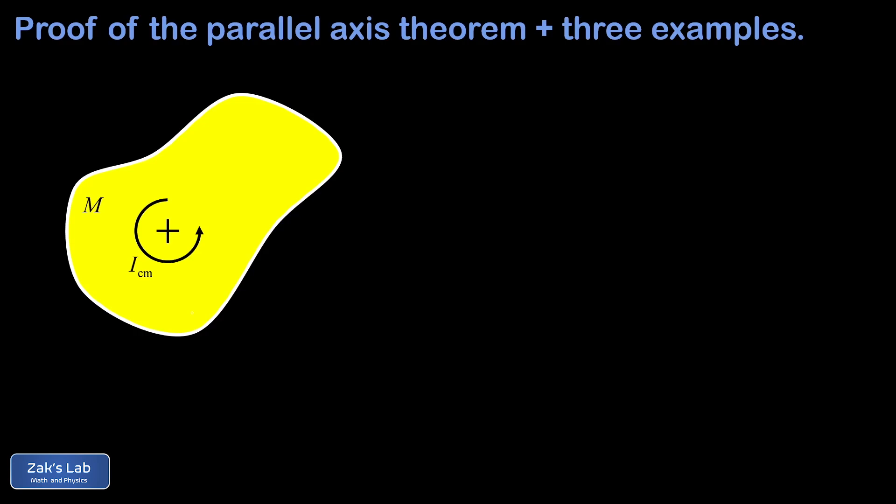The whole point of the parallel axis theorem is that we want to compute the moment of inertia about another axis away from the center of mass, which we call I_parallel, separated by a distance d from the center of mass. Qualitatively, I_parallel should be a bigger moment of inertia than I_CM because more of the mass is farther away from the rotation axis if we choose the I_parallel rotation axis.